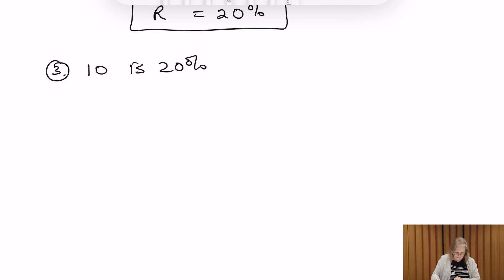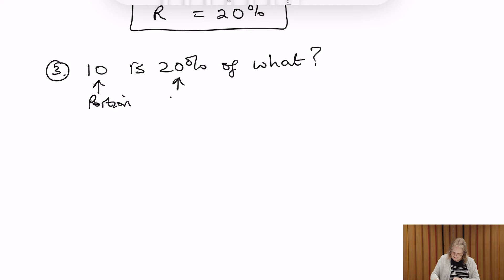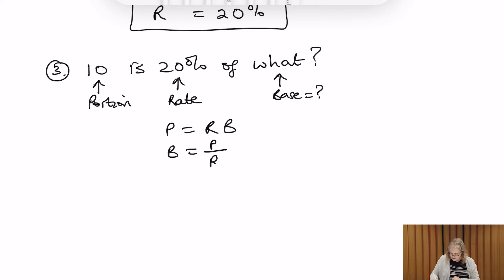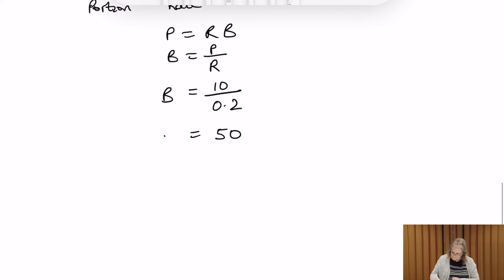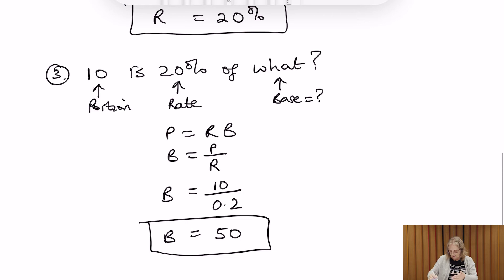The third question is: 10 is 20% of what? We recognize that 10 is the portion, 20% is the rate, and we want to find the base. Using our formula rearranged as B = P ÷ R, we plug in 10 divided by 0.2 — which on the calculator gives 50. Double-checking: 10 is 20% of 50 — that makes sense.